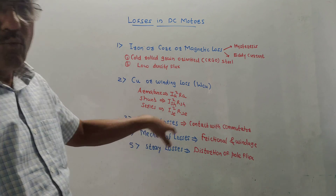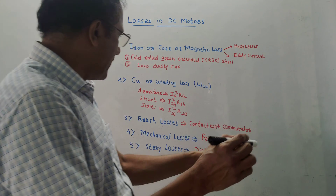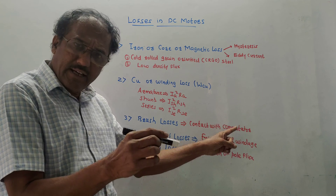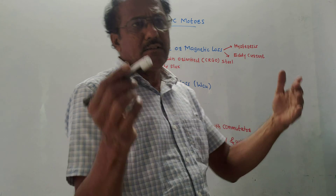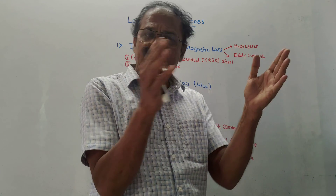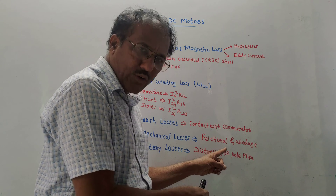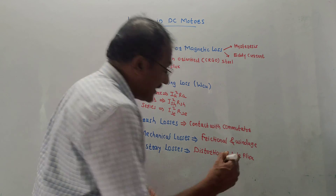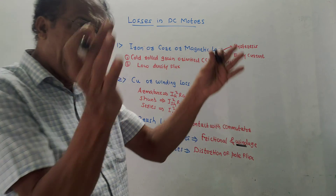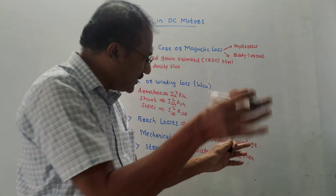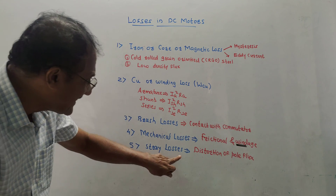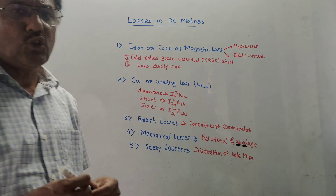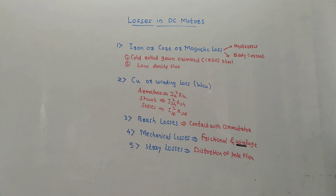Third type is brush loss — the brushes are in contact with the commutator, so due to this contact there can be losses. Fourth type is mechanical losses — due to rotating parts causing friction, also known as frictional loss — and windage loss, which occurs due to air gap between the rotating part and machine enclosure. Last type is stray loss, due to distortion of the pole flux.